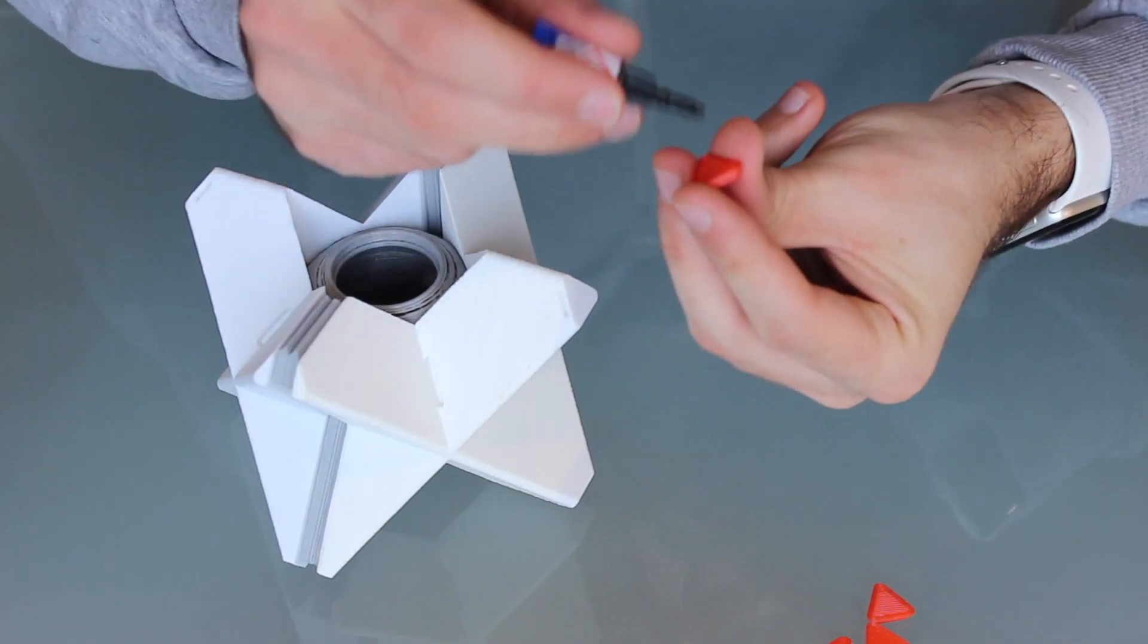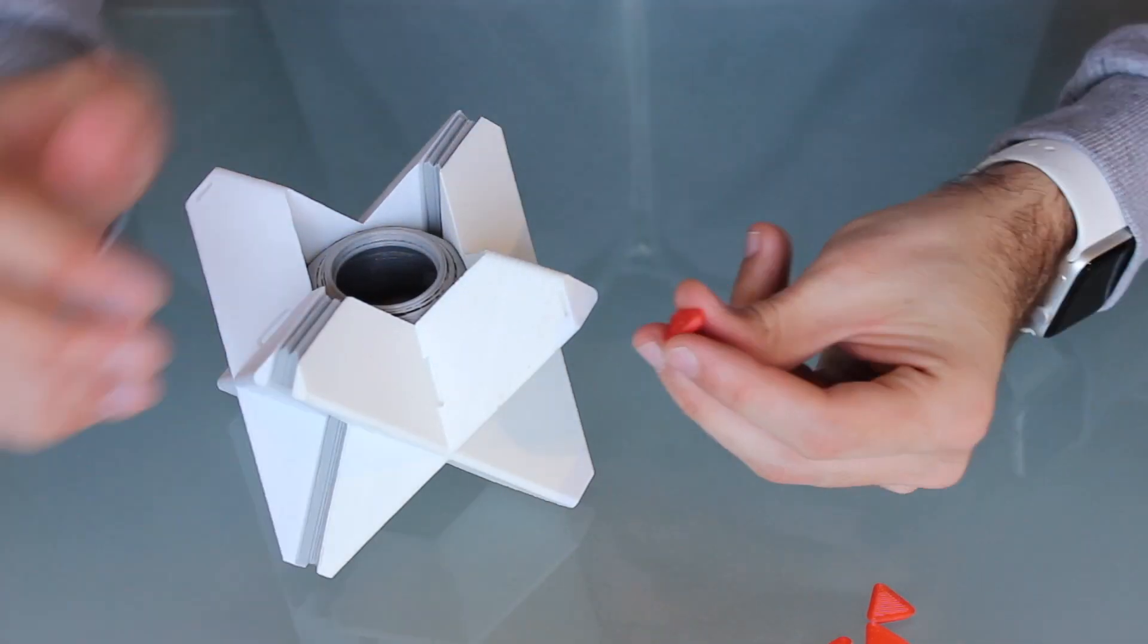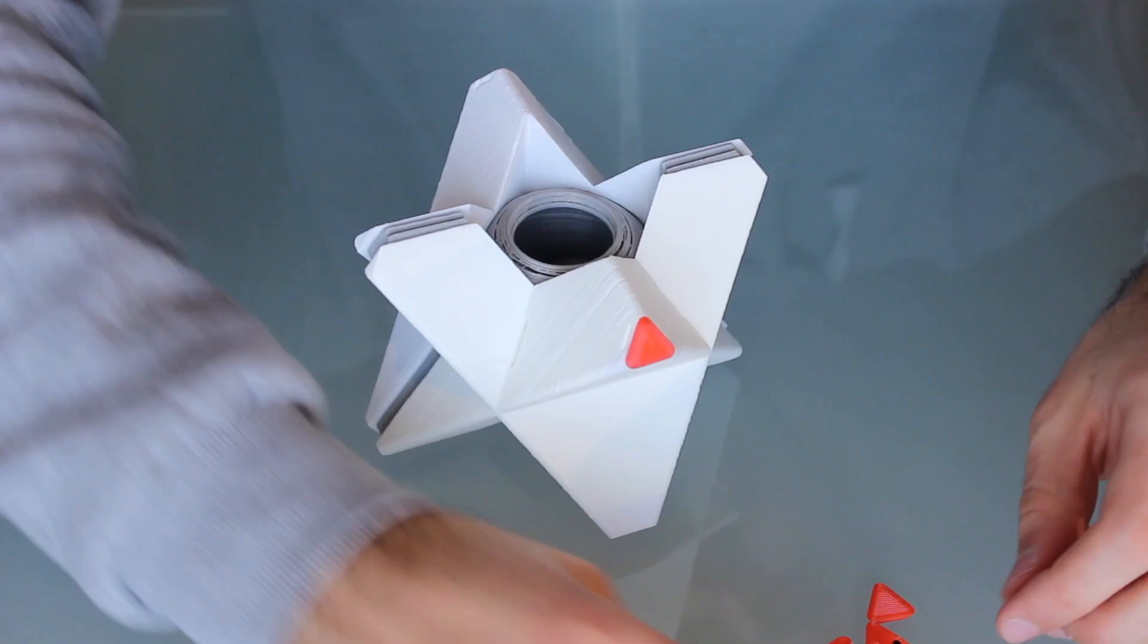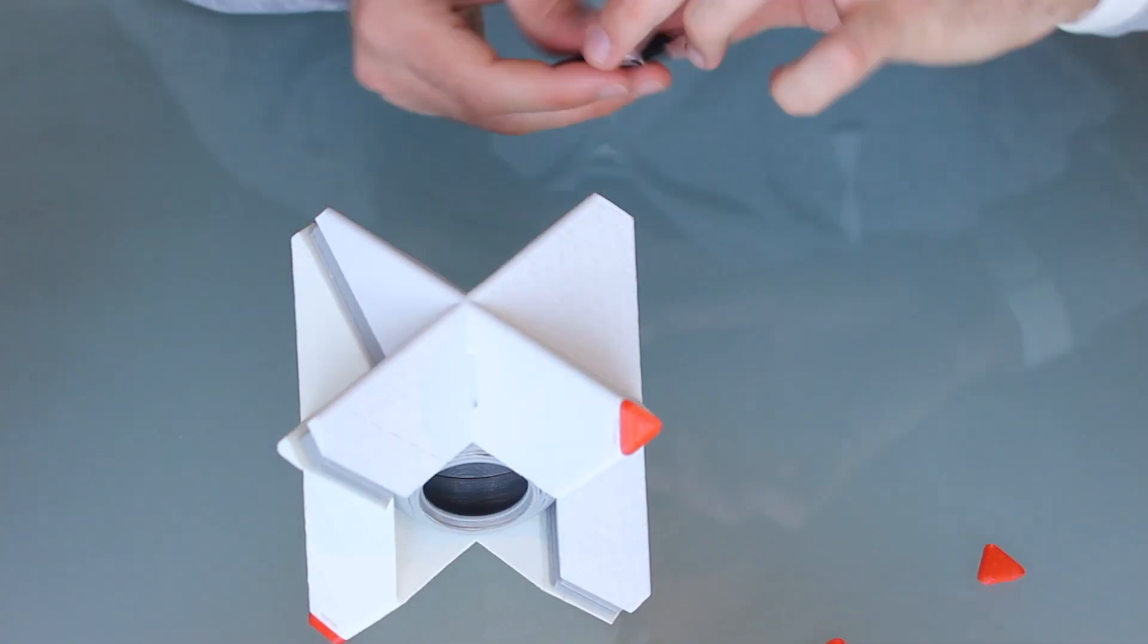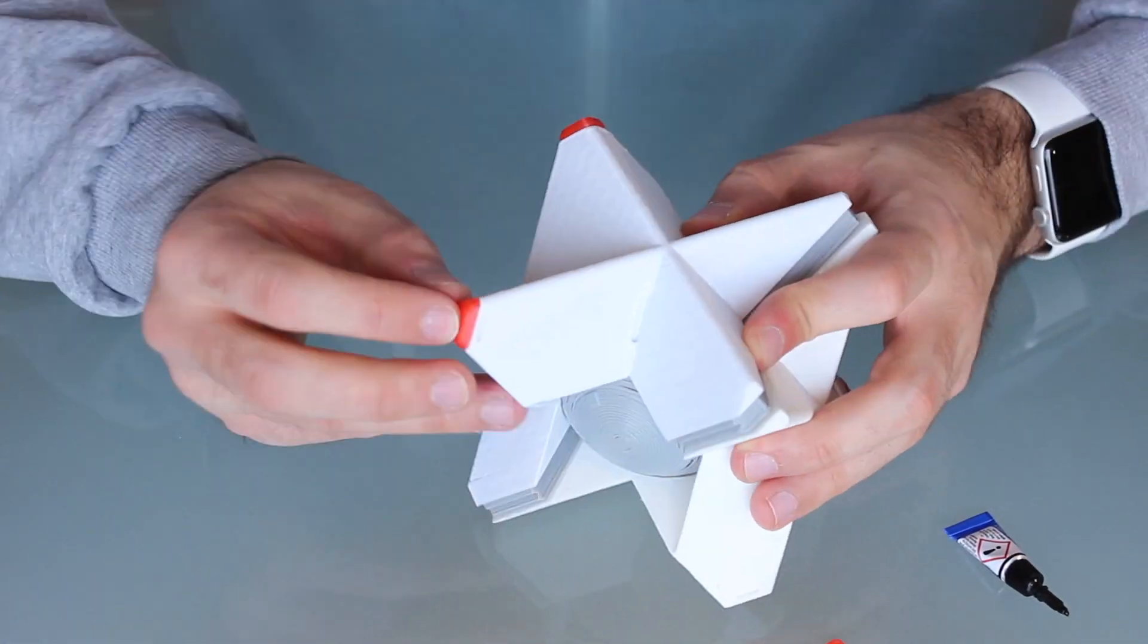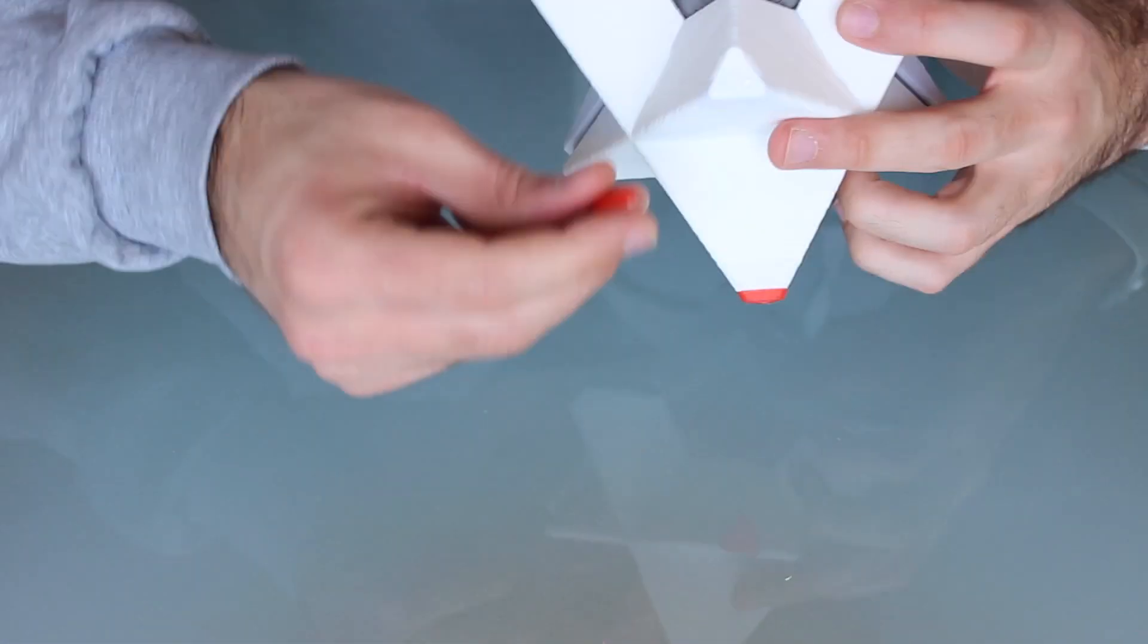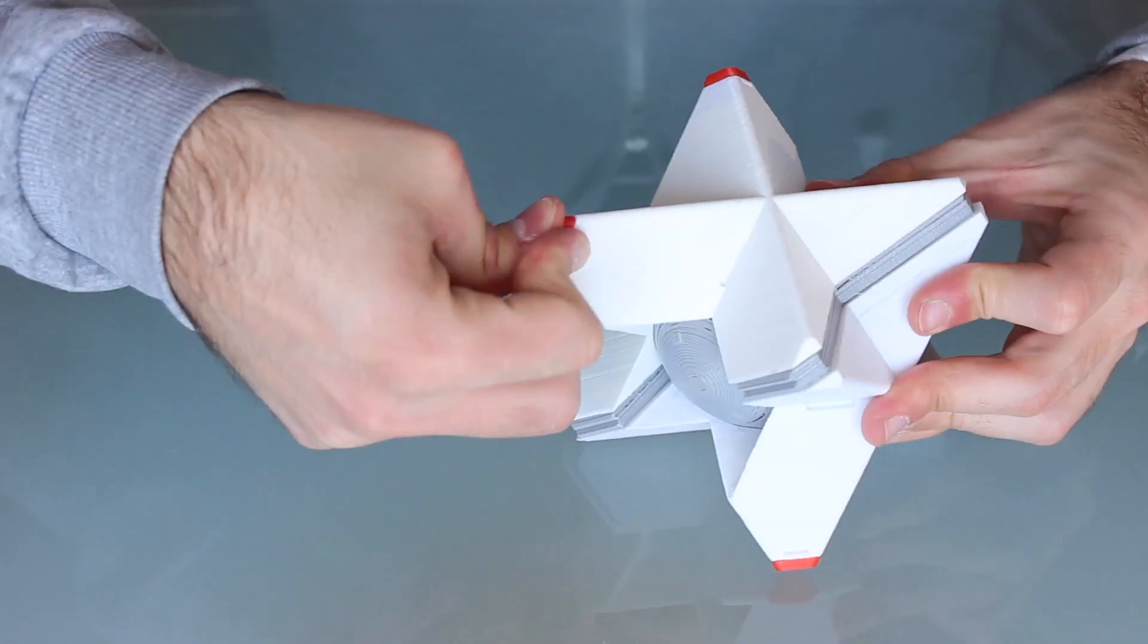And once we have the body assembled we are going to install the final details. So we will start with the red corners and we are gonna stick them in place using super glue. Remember to only put a small drop each time and wait 10 seconds applying some pressure so it will stick.